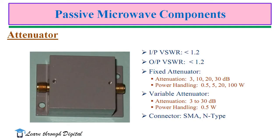One more passive microwave component example is the attenuator, which may be fixed or variable. For fixed attenuators, the attenuation range available is 3 dB, 10 dB, 20 dB, and 30 dB, with power handling capacity of 0.5, 5, 20, and 100 watts. For variable attenuators, the range is 3 to 30 dB with a power handling capacity of 0.5 watts. SMA and N-type connectors are used with attenuators.